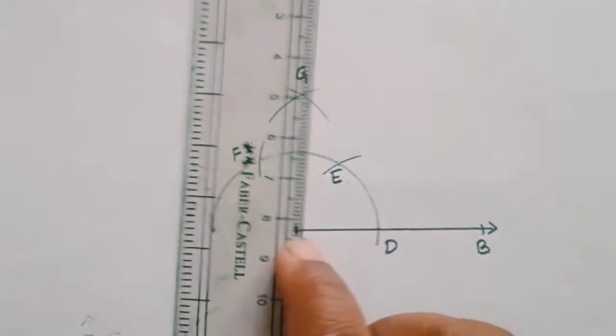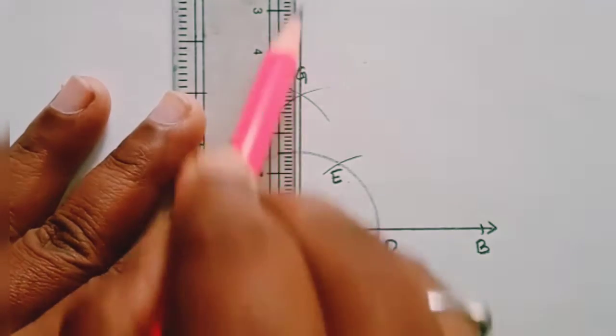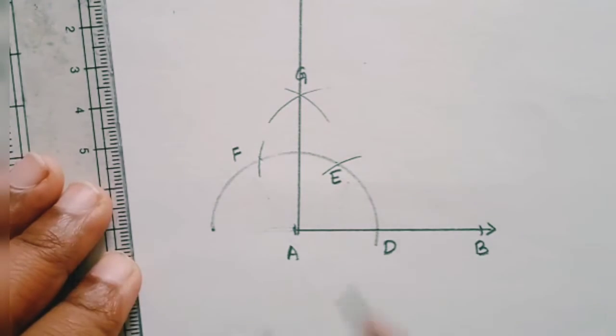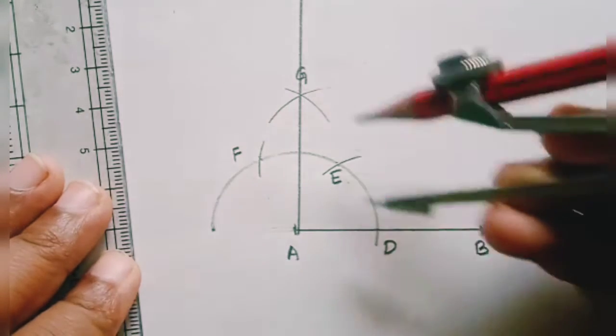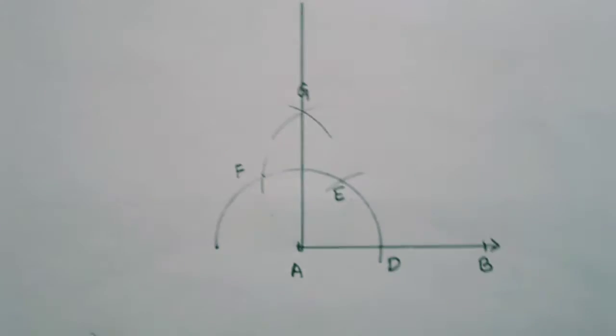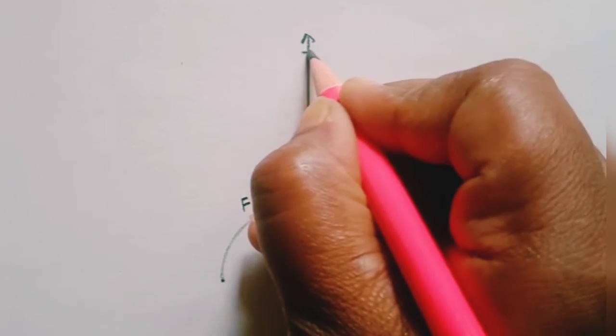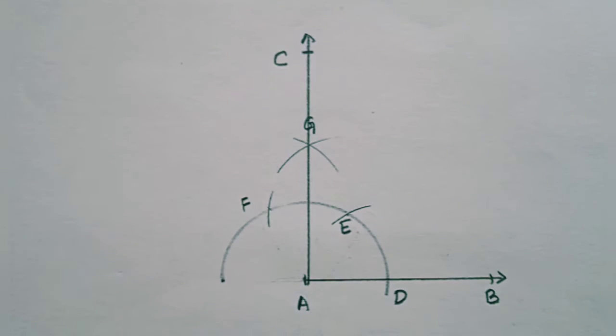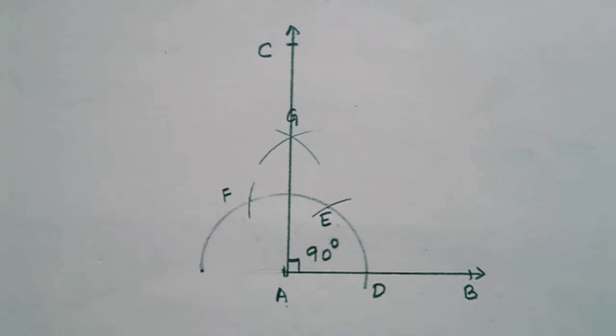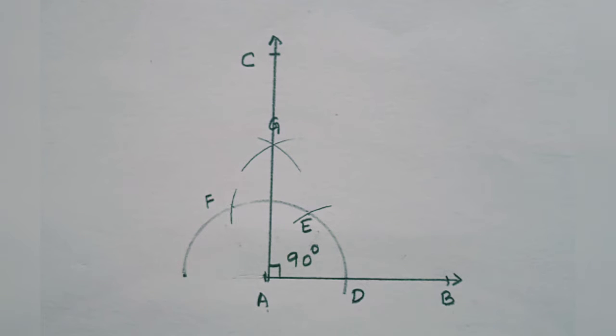Now draw the line. Please don't change the measurement. If you change the measurement here you will not get this exact 90 degree. You may get more than or less than 90 degree, so please be careful. And now this is another ray. And now you can mark this as angle C. So now you can see angle BAC is equal to 90 degree.